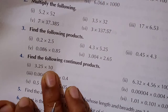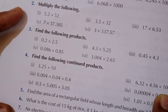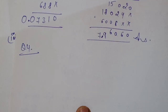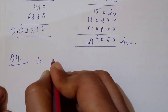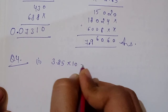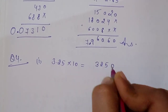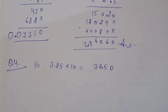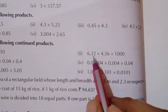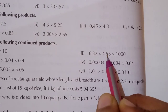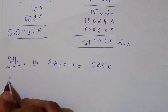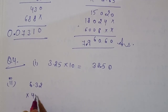Now find the following continued products. You have to find these. First part: 3.25 × 10 = 32.5 — shift decimal directly using the power-of-ten rule, two decimal places used. In the second portion, first multiply the two numbers, get the answer, then multiply by 1000. Second part: 6.32 × 4.56 — multiply these first.